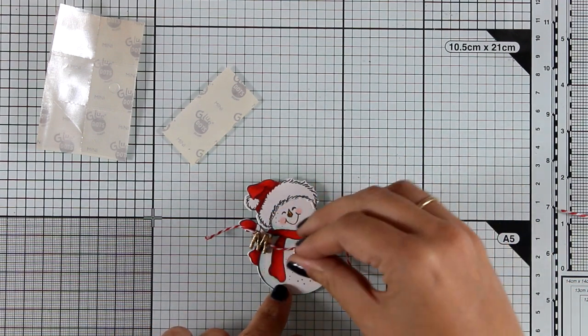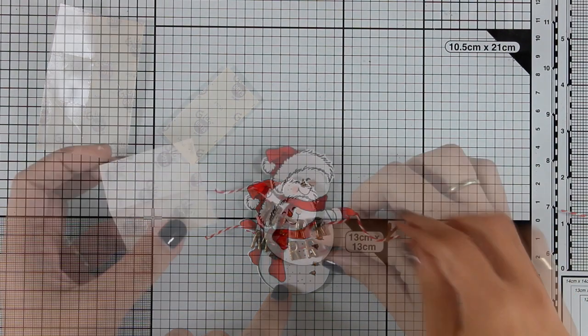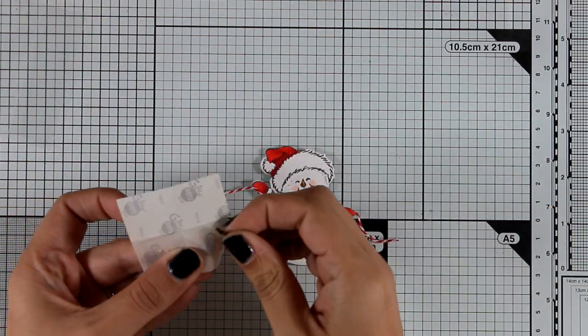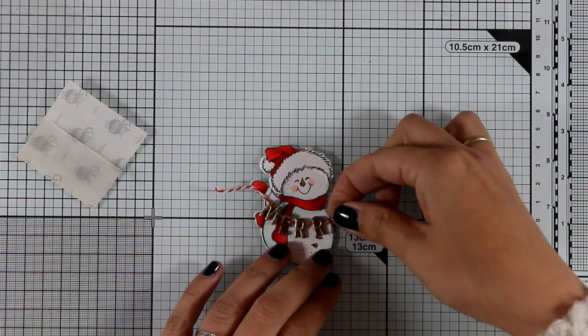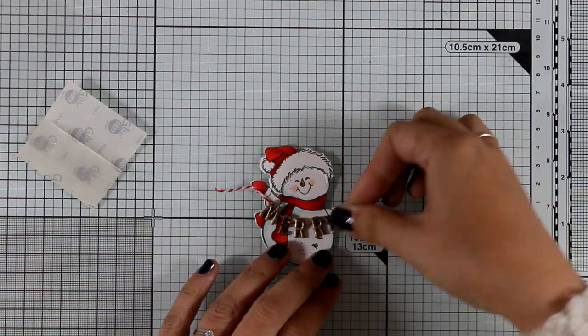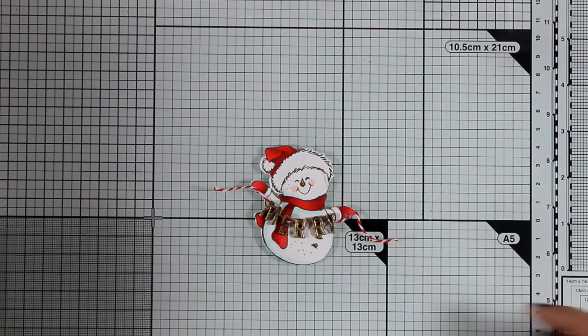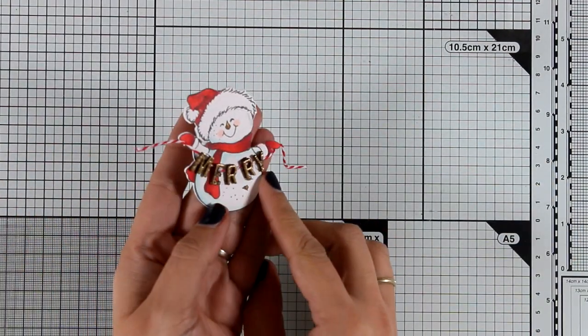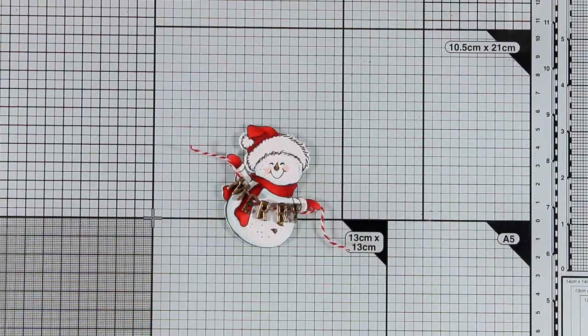I'm going to place all the letters there just to have an idea of where everything is going to go, and then I'm going to secure everything down with glue dots. I'm really happy with my focal point. I think he is looking adorable, and with such a gorgeous focal point, you don't really need to do a lot for your background.